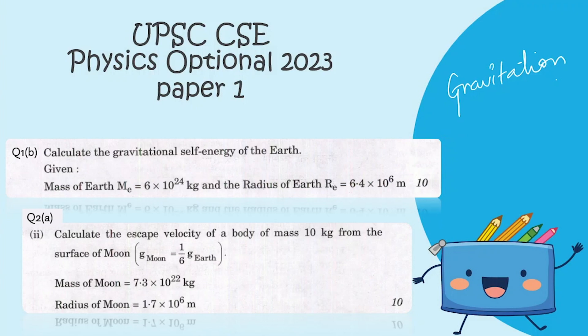Hello everyone, in today's video we will be solving these two numericals from the UPSC Physics Optional 2023 paper 1. These two numericals are from the gravitation part.